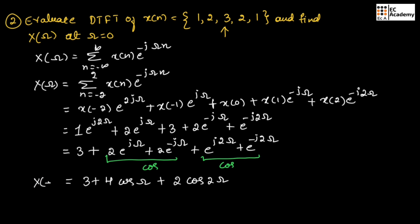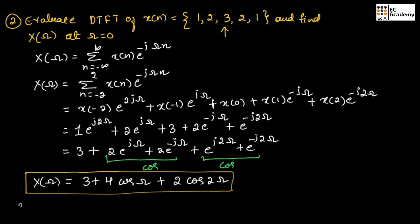This is the DTFT for the given sequence. At omega is equal to 0, X of omega is equal to 3 plus 4 plus 2, that is equal to 9, since cos 0 is equal to 1.